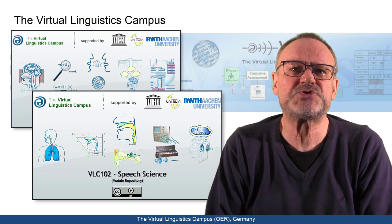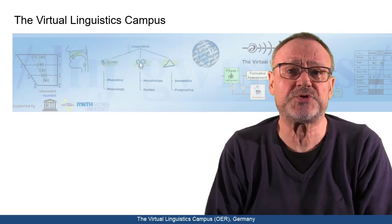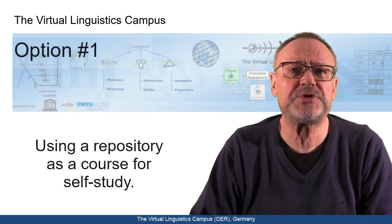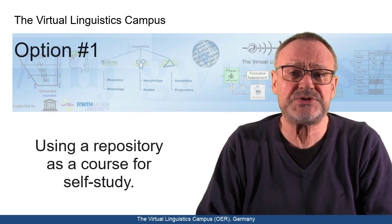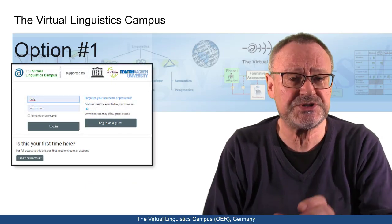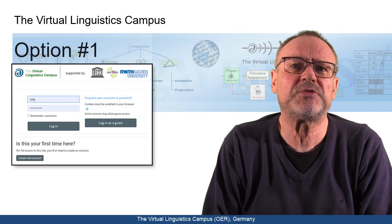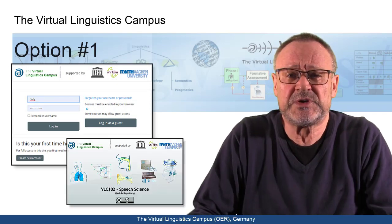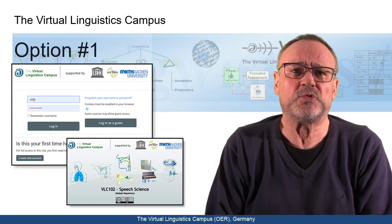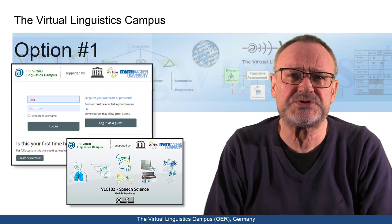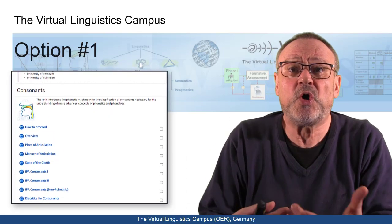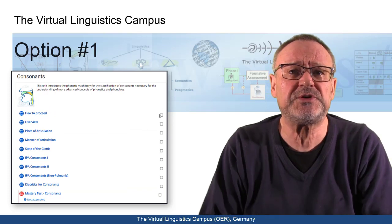There are two central options of using these repositories. Option number one: you want to use a repository as a student. This is the most common option. It requires that you first register on the VLC and then self-enroll to your repository — let's say VLC 102 Speech Science. Once enrolled, you can freely use the repository as an online course or as a source of information.